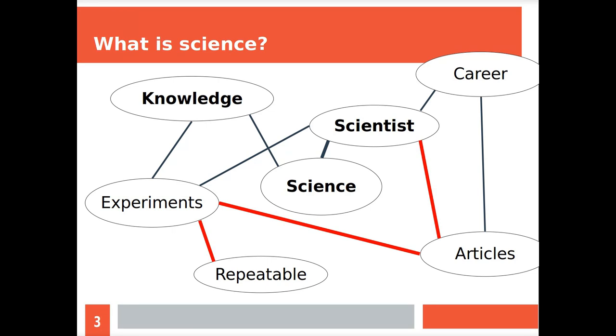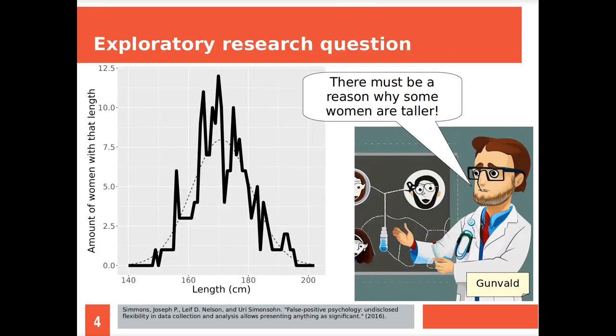Let's take a look at Gunvald. Gunvald is a scientist. He found some data here at the left. All the data I show you from Gunvald, there is no effect at all in them. I just simulated this by drawing random numbers. Gunvald measured a lot of women of a certain length. He made a plot with the x-axis showing the length of those women and the y-axis showing the amount of women with that height. It's called a histogram.